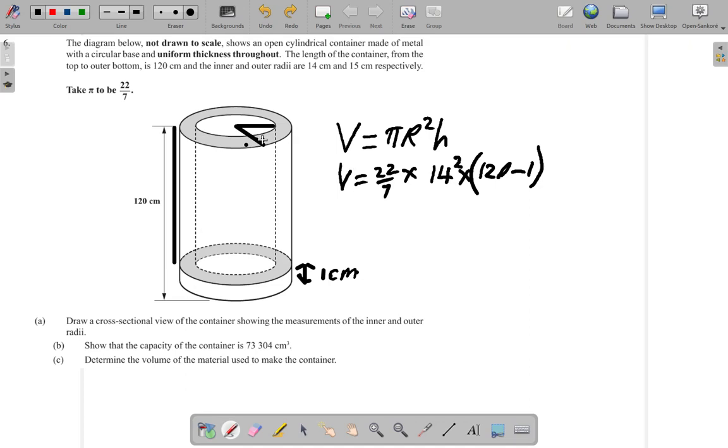119 from the top of the container. So the volume is 22 over 7 times 14 squared. Let's use 14 by 14 times 119. 7 to 7 is 1, 7 to 14 is 2. So what you have here, I'll just use my calculator.